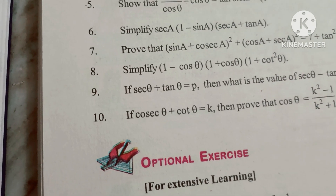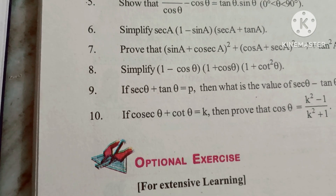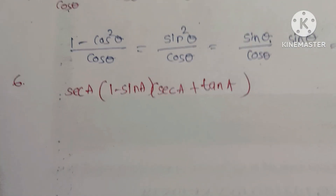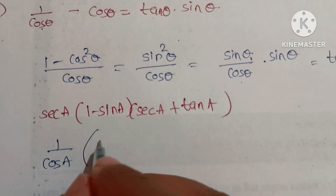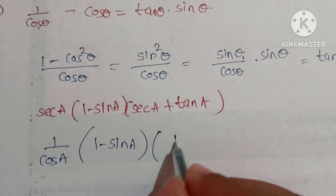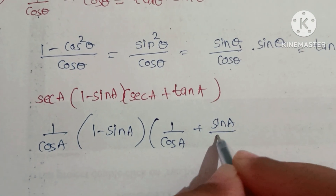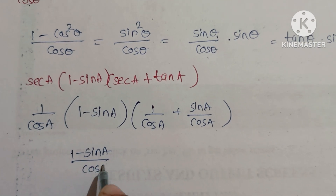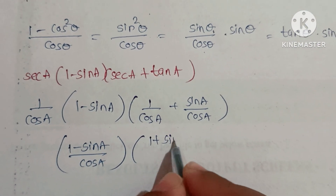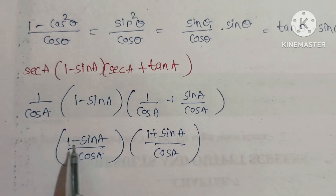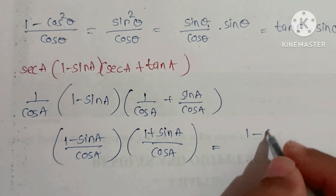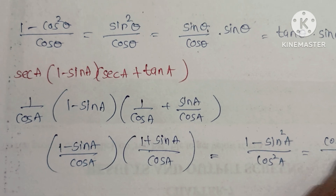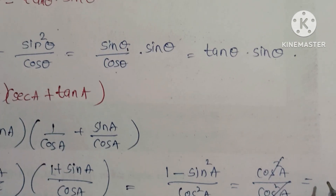Sixth question: Simplify secA(1 - sinA)(secA + tanA). Write secA = 1/cosA and tanA = sinA/cosA. Multiply: (1/cosA)(1 - sinA) × (1 + sinA)/cosA = (1 - sinA)(1 + sinA)/cos²A = (1 - sin²A)/cos²A = cos²A/cos²A. Both cancel, so the answer is 1.